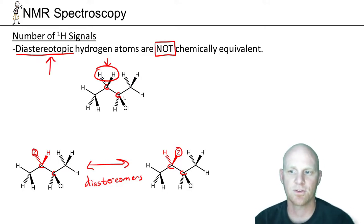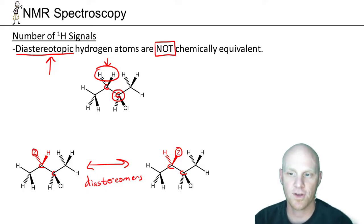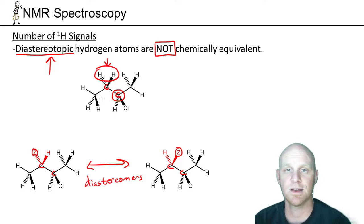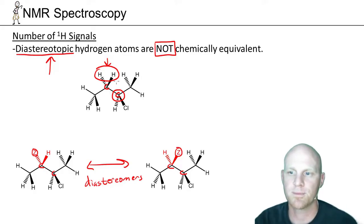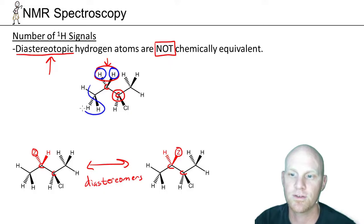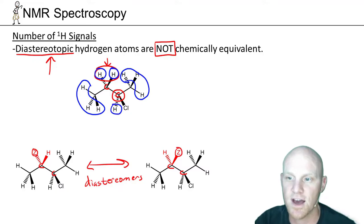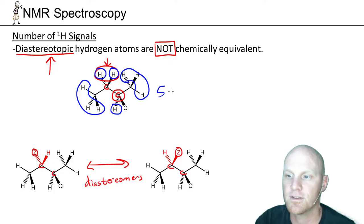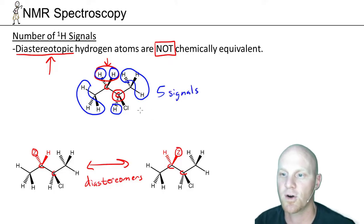Most of the time, this reduces down to: if you already have an actual true chiral center in the molecule, then every CH2 remaining in that molecule is going to have its two H's be diastereotopic. Because these are diastereotopic, they give two different signals — two different environments. Plus these three H's equivalent by free rotation, these three H's equivalent by free rotation, and this one hydrogen — giving five environments and therefore five signals in the HNMR spectrum.